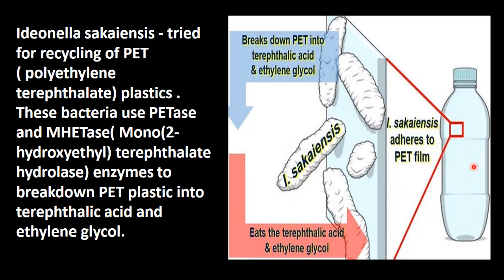This bacteria uses these two enzymes to break down the PET plastic bottle into terephthalate acid and ethylene glycol. It is degradable. The bacteria eats it — eats the terephthalate acid and ethylene glycol, breaking down the PET into those products.